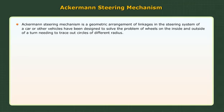The Ackerman steering mechanism is a geometric arrangement of linkages in the steering system of a vehicle, designed to solve the problem of wheels on the inside and outside of a turn needing to trace out circles of different radii.